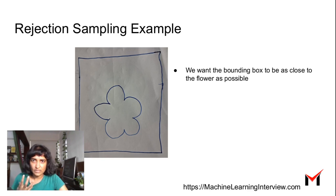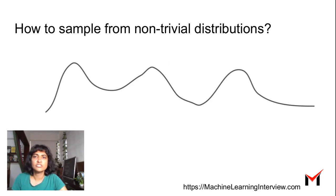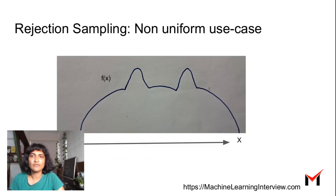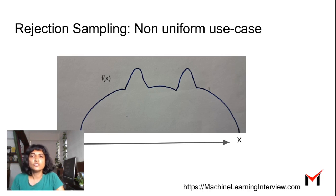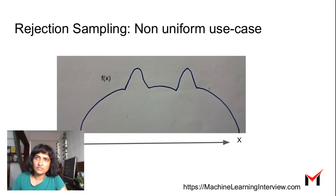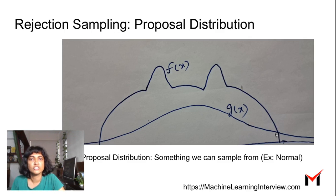Now let's look at a more non-trivial case. We could have complicated distributions from which our data is coming. For example, this is a one-dimensional PDF — let's say our data is coming from a cat-head shaped PDF. The X-axis is the domain and the Y-axis is the probability density across it. This is not easy to sample from directly. For rejection sampling here, we first pick a distribution that is easy to sample from — let's say a normal distribution, which we call g(x), while f(x) is the cat-face distribution.